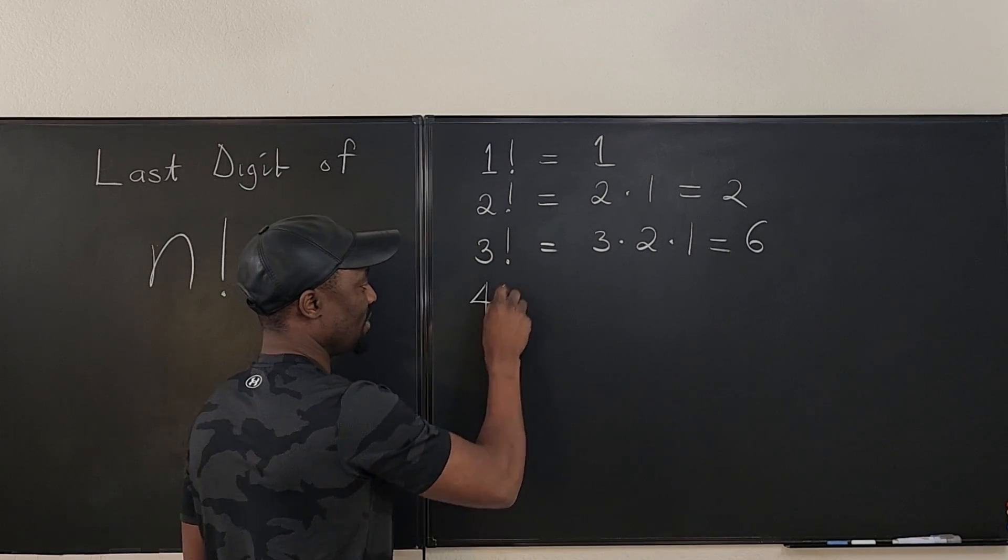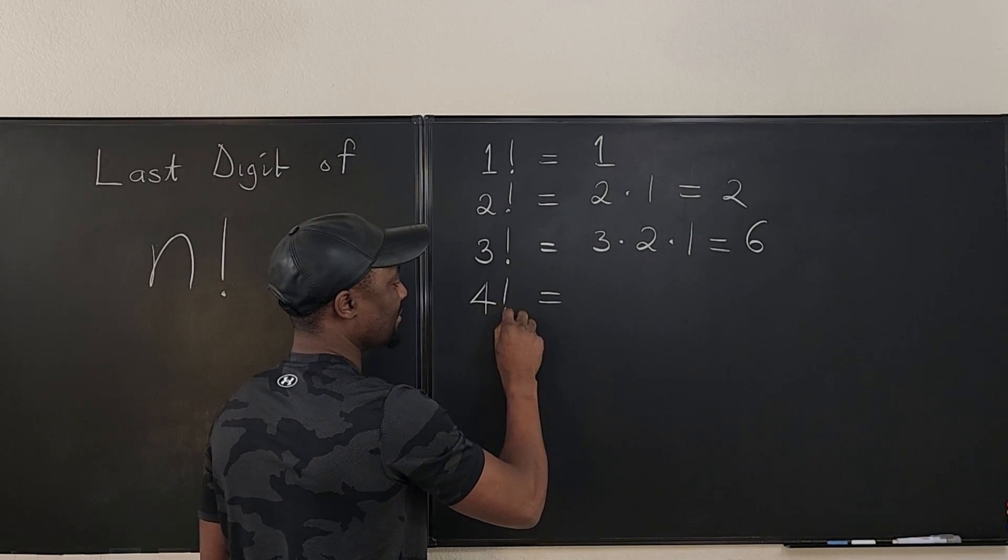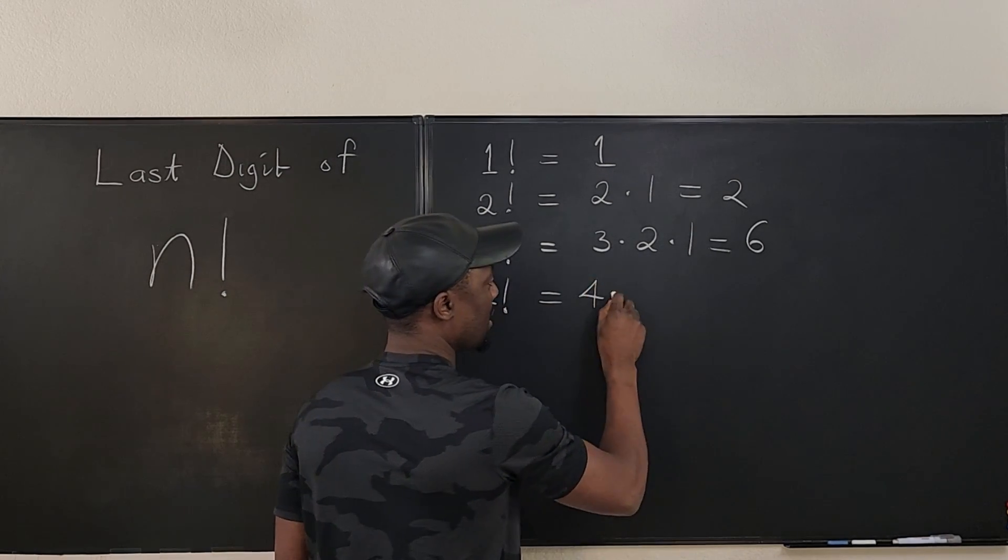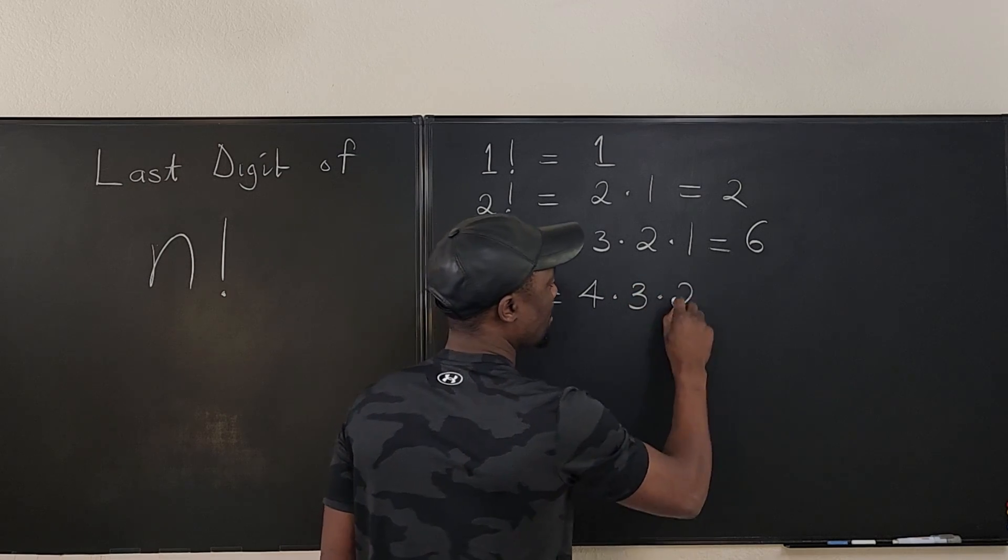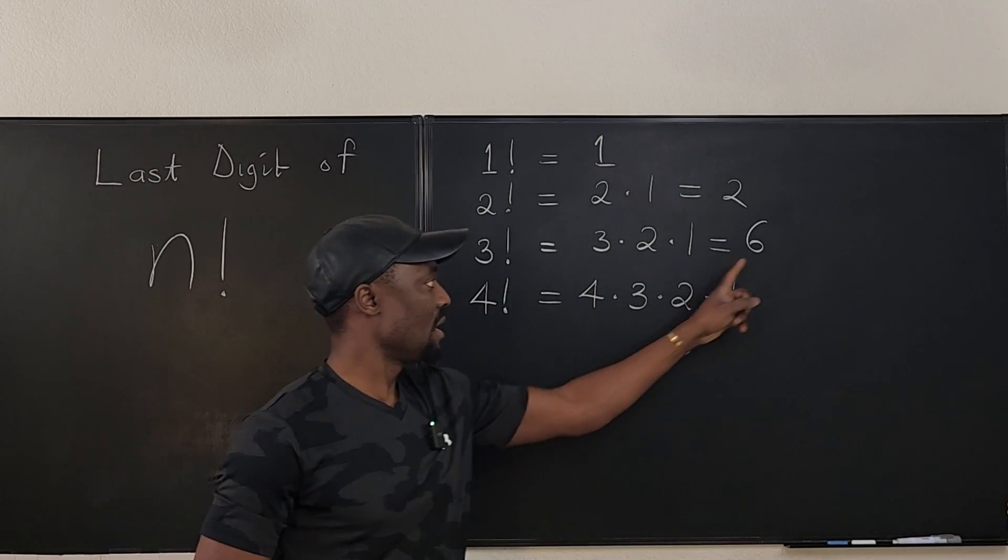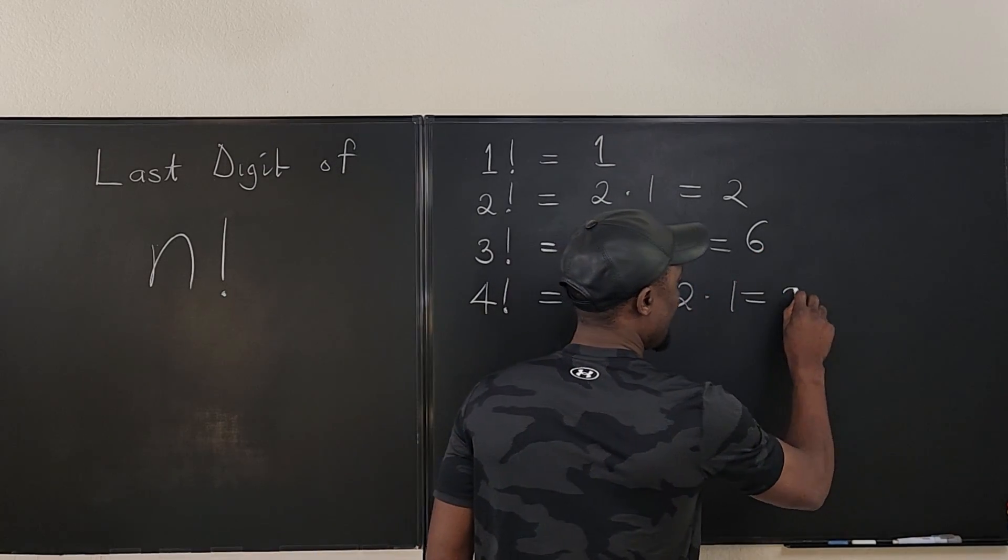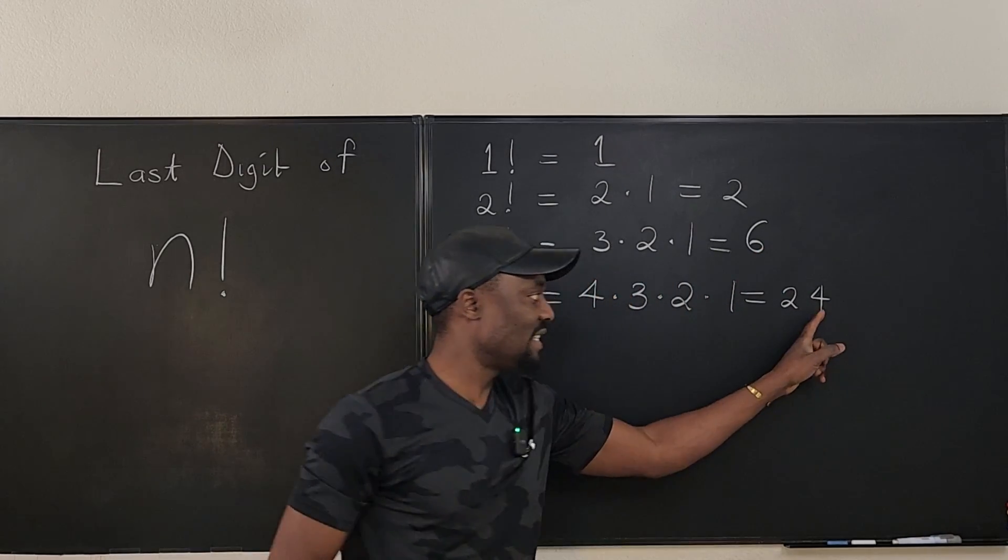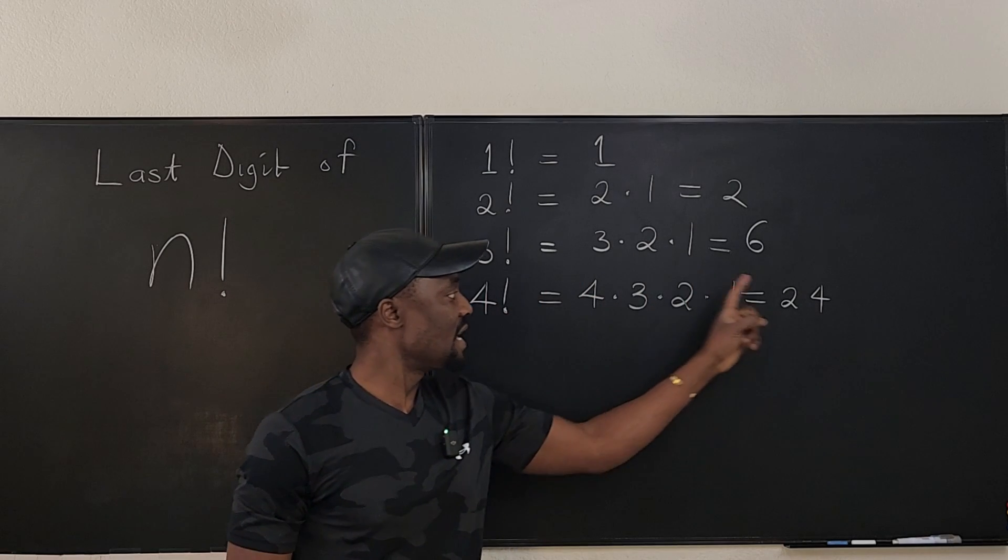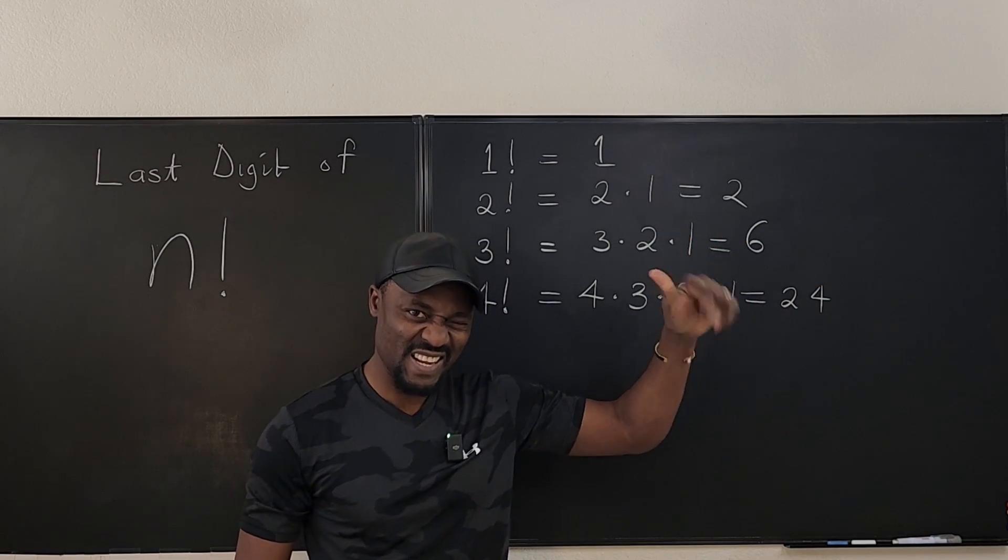Let's take it a bit higher. So we go four factorial. What do we get? We're going to get four times three times two times one, which is basically four times six, and that's 24. So we have 24 and the last digit of four factorial is four.